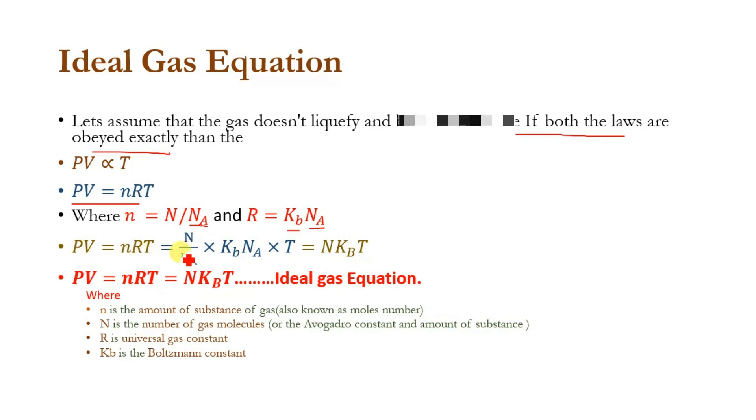PV equals nRT. Putting the values for n and R, we will get N k_B T. So PV equals nRT or PV equals N k_B T. This is the final form of the ideal gas equation.